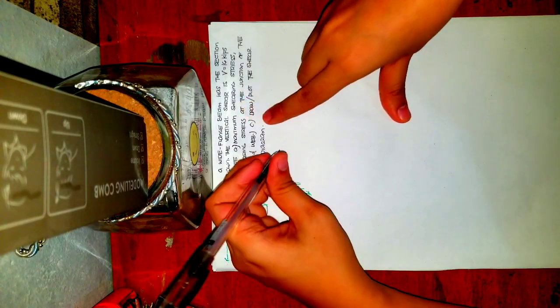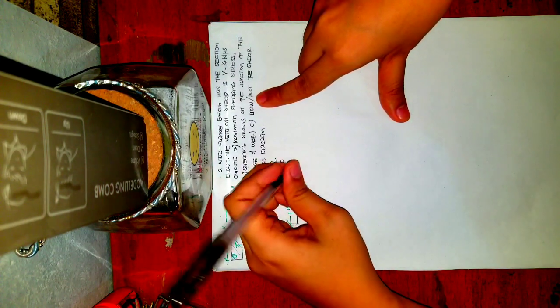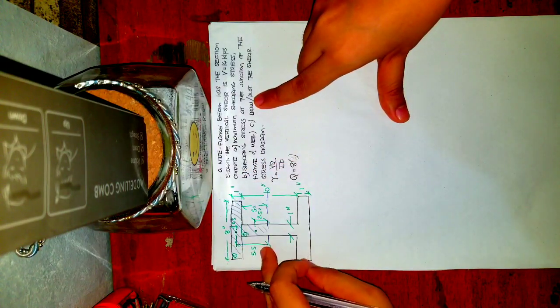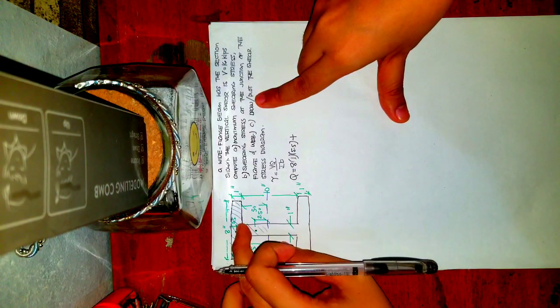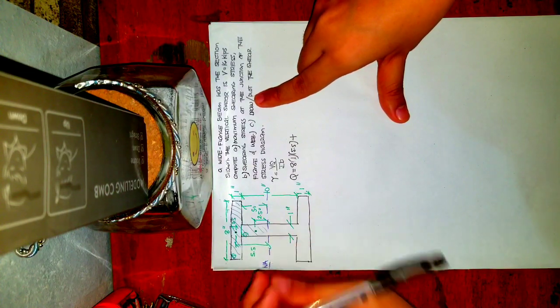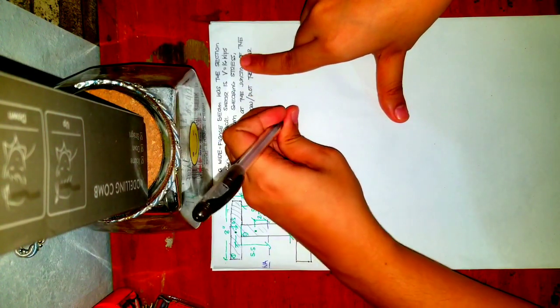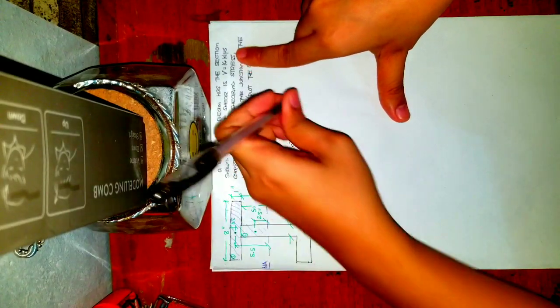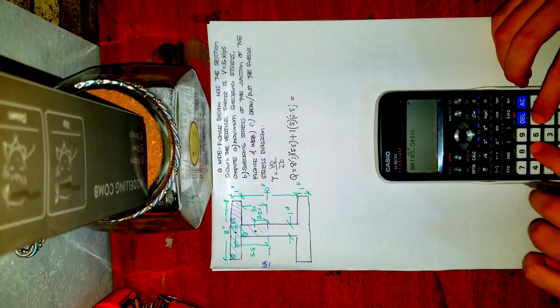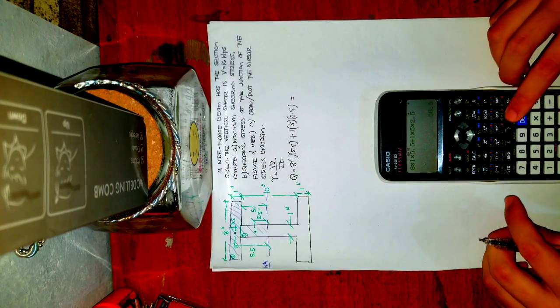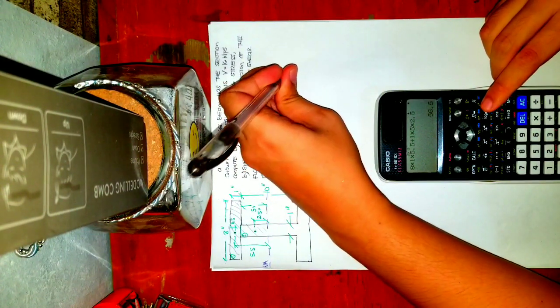And next for rectangle 2. If this is 5, half of that is 2.5 inches. So to solve for Q, Q is just equals to A1 times 1 multiplied by the distance of 5.5, plus rectangle 2. The area is the width of the web, which is 1, times the height of 5, times the distance of 2.5. So A1 is 8 times 1 times 5.5 plus 1 times 5 times 2.5, so that is 56.5 inches cubed.